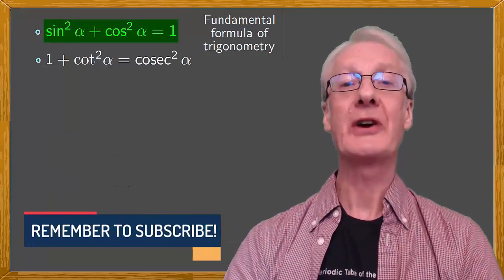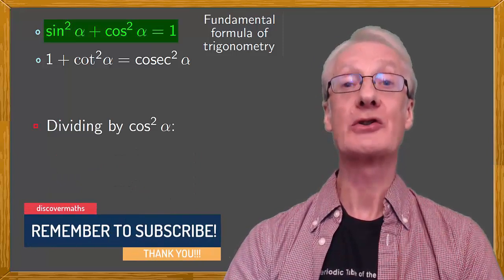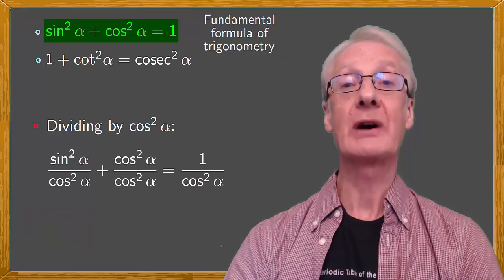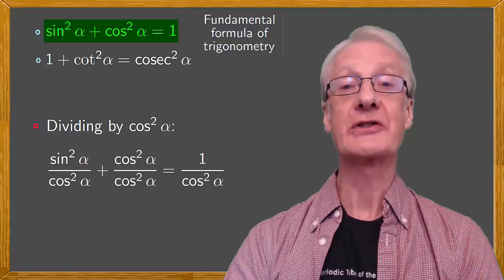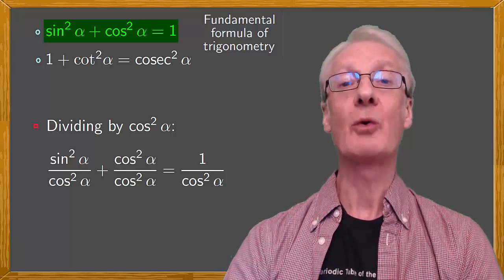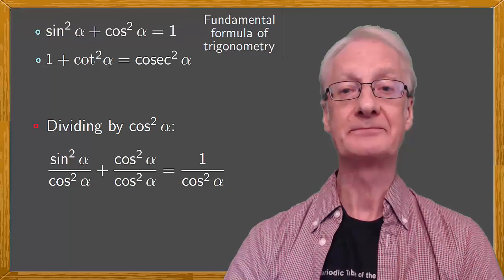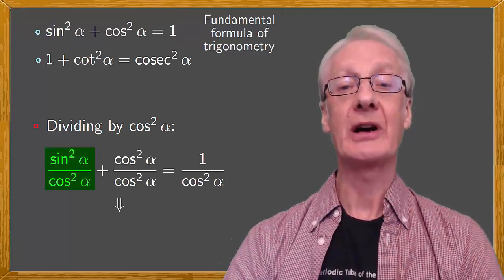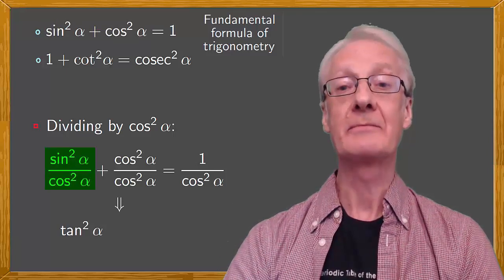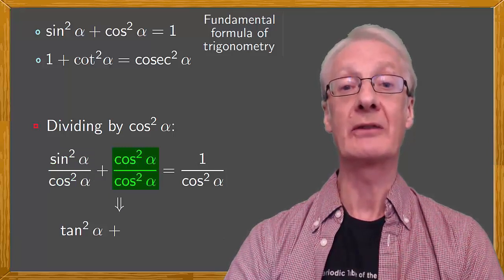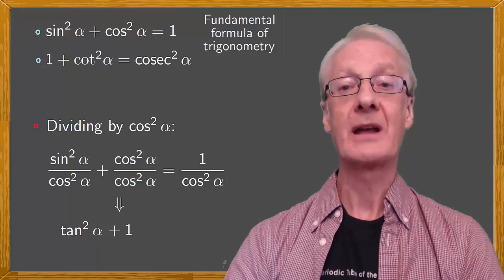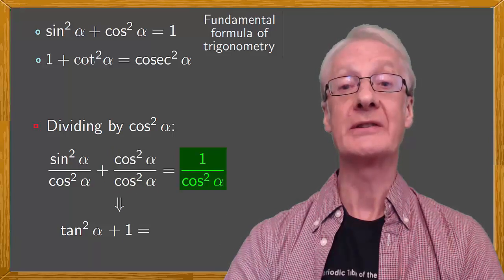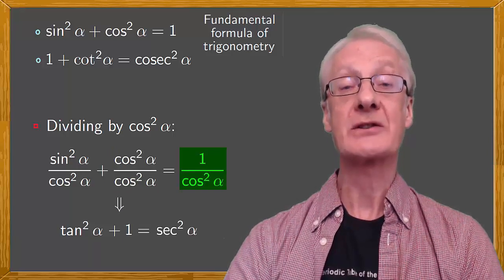Next, we'll divide both sides of the fundamental formula by cos squared alpha. To give sine squared alpha over cos squared alpha plus cos squared alpha over cos squared alpha equals 1 over cos squared alpha. Sine over cos is tan, so on the left side we have tan squared alpha plus cos squared alpha over cos squared alpha, which is 1. And this is equal to, remembering that 1 over cos is the secant, sec squared alpha.